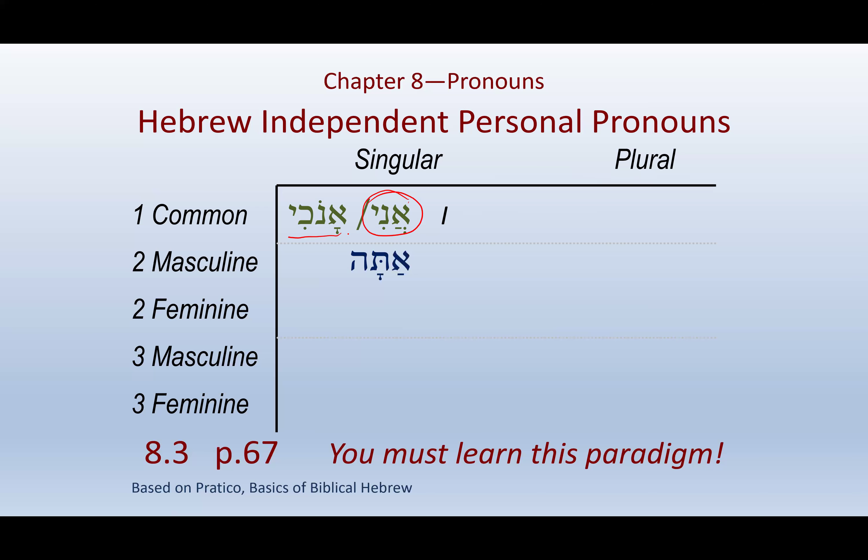For masculine second person singular, we have Atah — talking to one man, you say Atah meaning 'you.' If you remember last week, we looked at Mashalomcha — 'how are you?' If I was talking to another man, I'd say Tov — 'I'm good' — then V'atah — 'and you?' But if a woman asked me and I said Tov, then to ask how she's doing, I'd say V'at — At is the feminine 'you.'